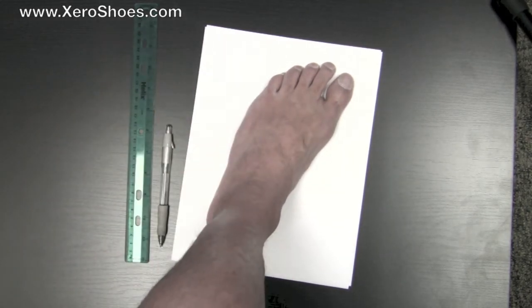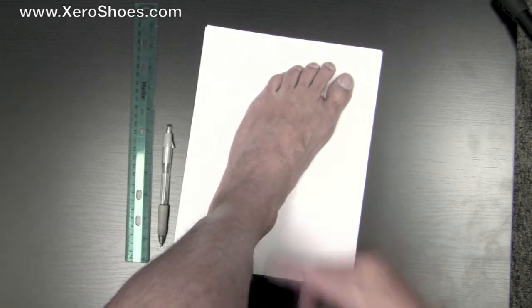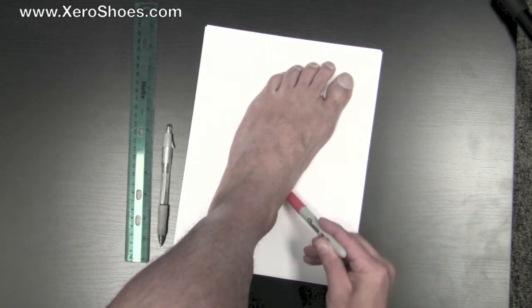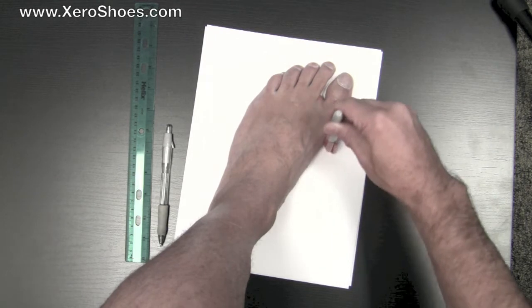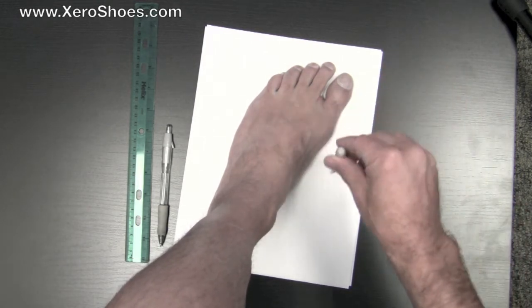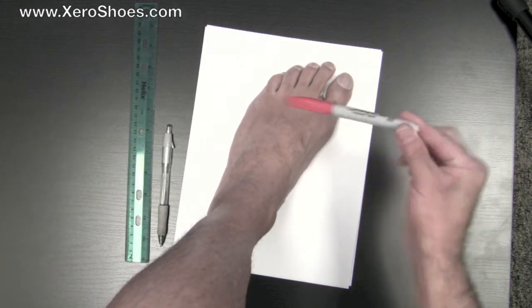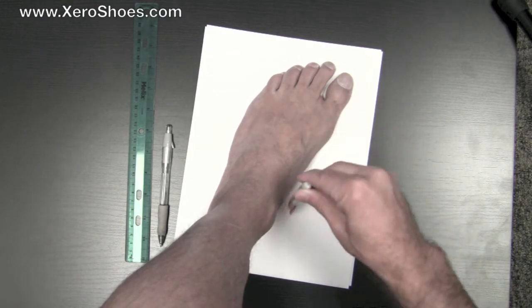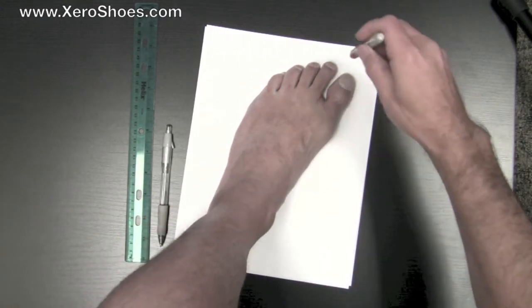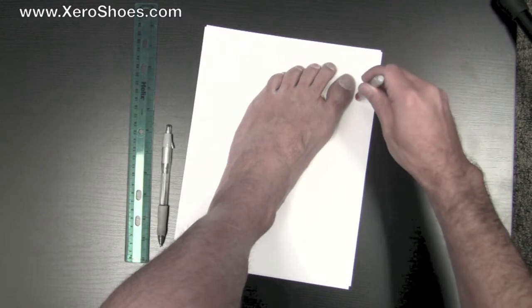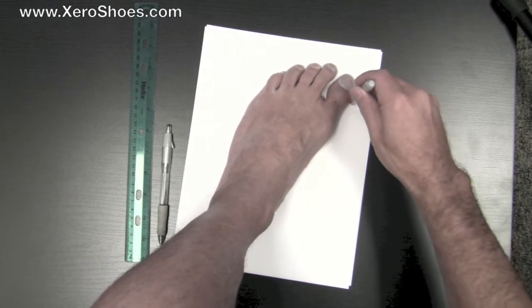What we're essentially trying to capture here is not every nook and cranny of where your foot touches the ground, but essentially the shadow of your foot. So you'll be holding the pen completely vertically, I'm using a sharpie in this case, and just going around your foot with the pen held vertically. You don't need to get it perfect. You don't need to get in between every toe, for example. You just need to get the right shape.